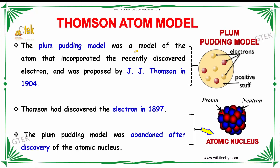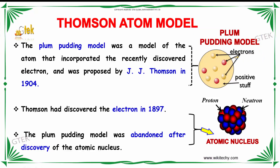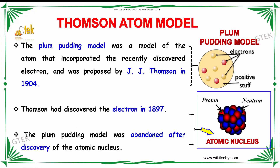The Plum Pudding model was a model of the atom that incorporated the recently discovered electron. This was proposed by the great scientist J.J. Thomson, a physicist. Thomson's atom model suggests that the matter will have a Plum Pudding model, which will have a lot of electrons with positive charge. Thomson discovered the electron in 1897. The Plum Pudding model was abandoned after the discovery of the atomic nucleus, which contains the proton and neutron.